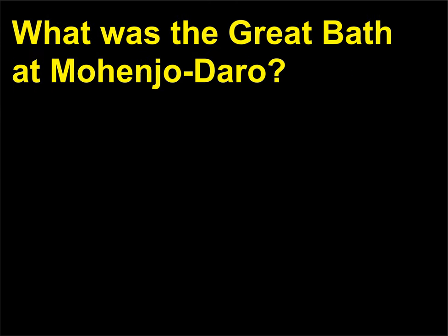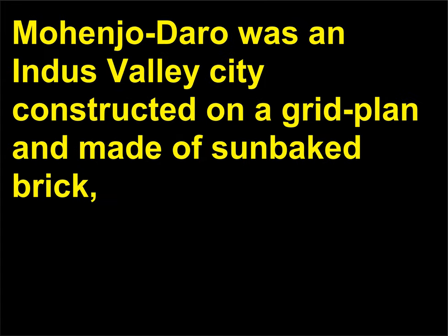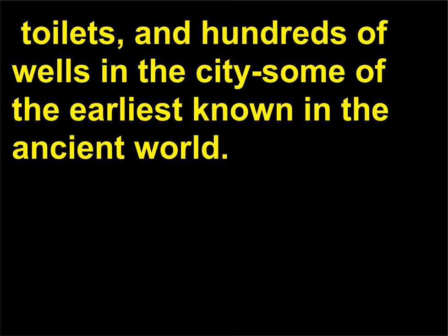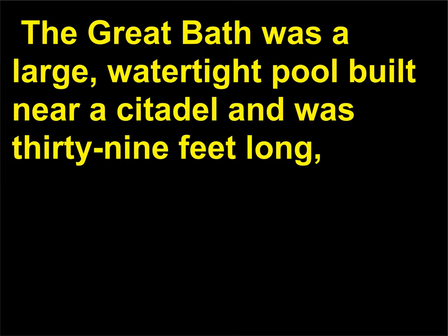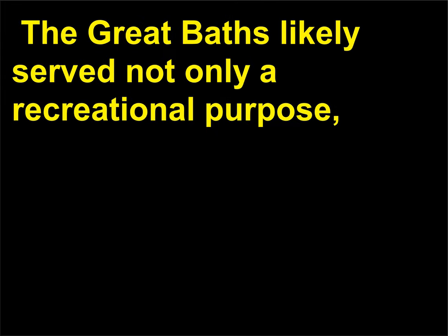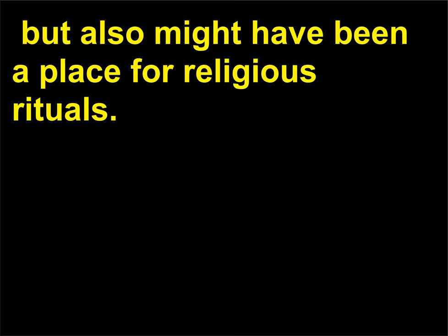What was the great bath at Mohenjo-daro? Mohenjo-daro was an Indus Valley city constructed on a grid plan and made of sun-baked brick, featuring extensive drainage and plumbing systems. There are records of private bathing areas, toilets, and hundreds of wells in the city, some of the earliest known in the ancient world. The great bath was a large, watertight pool built near a citadel and was 39 feet long, 23 feet wide, and 8 feet deep. The great bath likely served not only a recreational purpose but also might have been a place for religious rituals.